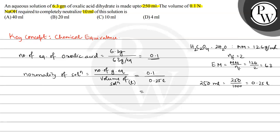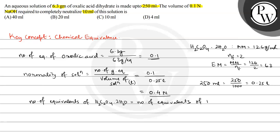So the normality of the oxalic acid solution is equal to 0.4 normal. Now for the volume of 0.1 normal NaOH required — when we carry out a reaction between an acid and a base, we use the equivalence relation: number of equivalents of oxalic acid H₂C₂O₄·2H₂O equals number of equivalents of NaOH. The formula is normality multiplied by volume equals normality of NaOH multiplied by volume of NaOH.